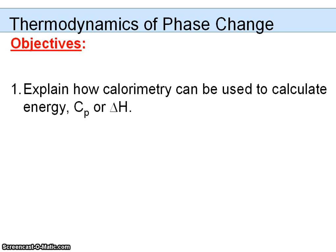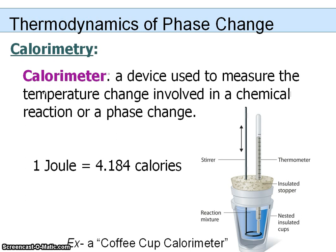This lecture is the third in a series about the thermodynamics of phase change, and in this lecture we're going to look at how a calorimeter is used. A calorimeter is a device used to calculate energy, and it comes from the term calorie, which is what we use to measure energy.